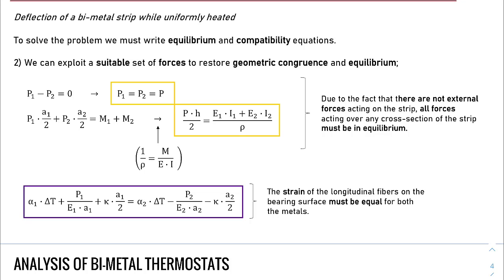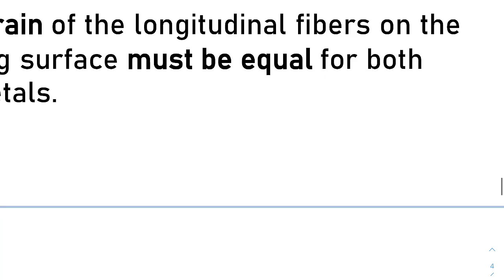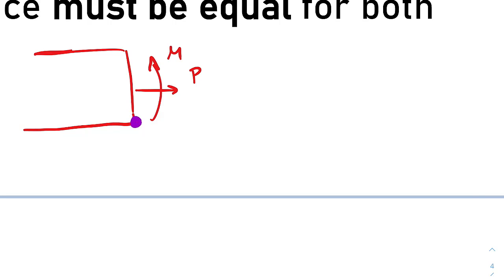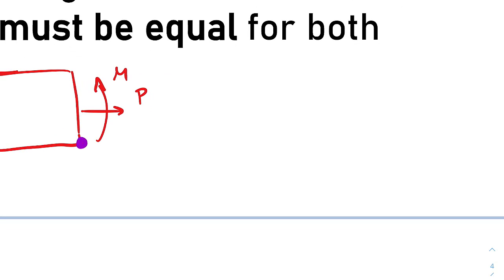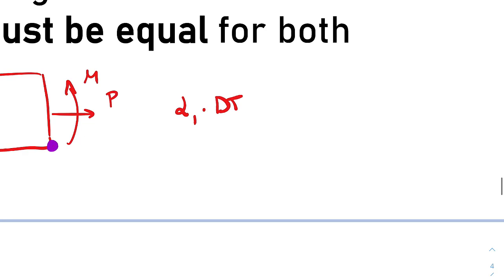As regarding compatibility equation, we have to focus on the bearing surface. What we should write is that the true strain on this point should be equal for both the metals. So the strain 1 in this point must be equal to the strain 2 where 1 is this material and 2 is this one. Let's take just the material 1 for example. We know that on the material 1 is acting a force P and a moment M. We want to write the strain of this point.